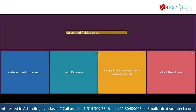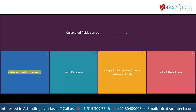Question: Calculated fields can be ___. Option 1: Date, Numeric, Currency. Option 2: Text, Boolean. Option 3: Single instance and multi-instance fields. Option 4: All of the above.